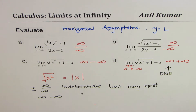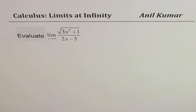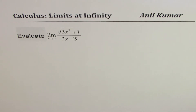With this in mind, let's figure it out algebraically. We begin with the first question: evaluate the limit as x approaches infinity for square root of 3x squared plus 1 divided by 2x minus 5. I'd like you to pause the video, answer the question, and then look into my suggestions.